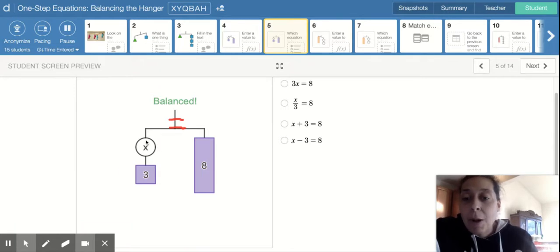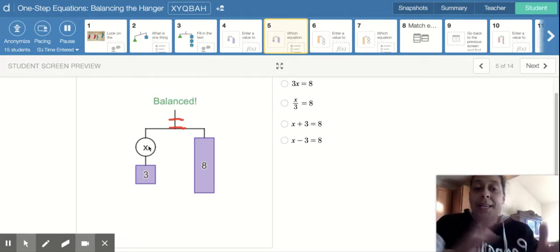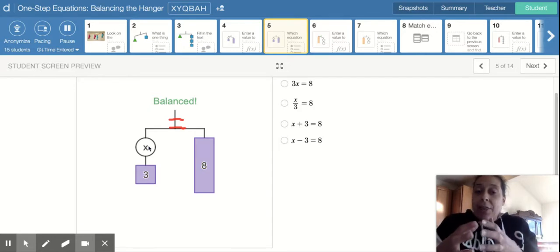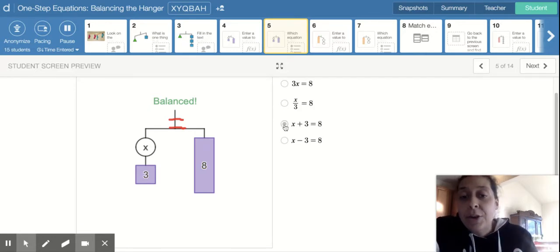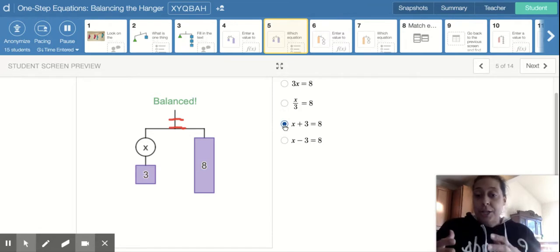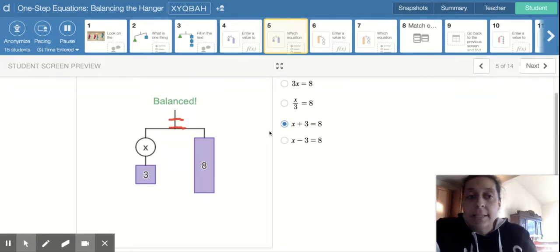But remember, we need to talk about what this operation is here. So we see that we have a three and we have an X. So what we're going to be doing is we're just going to be putting it together. And the way that we put it together is by using addition. So the only one that makes sense is X plus three equals our eight.